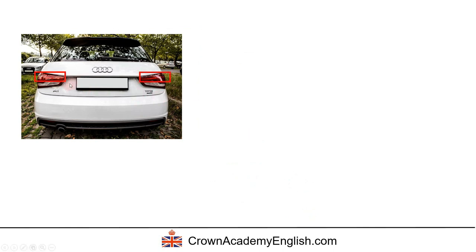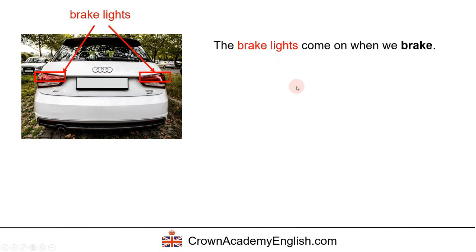So in red, here we have brake lights. Brake lights come on when we brake — that's where the name comes from. So to brake, notice that this is a verb. I am braking — this means I am putting my foot on the brake pedal and I am decreasing speed. So we have a verb: to brake.